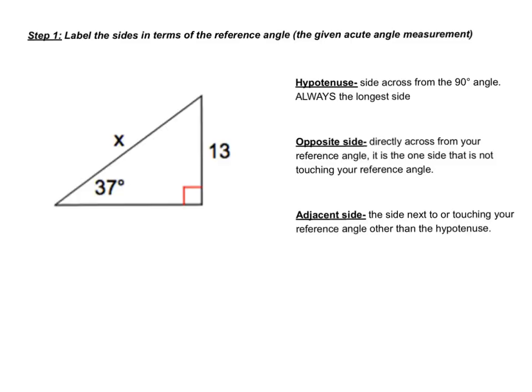The first step for any problem with trigonometry is to label the sides in terms of the reference angle. The reference angle is the given acute measurement in the problem. So in this case, the reference angle is 37.